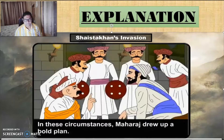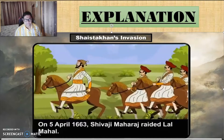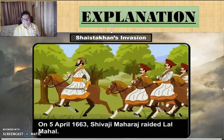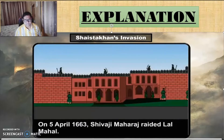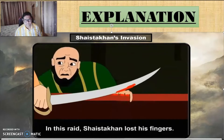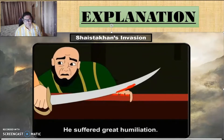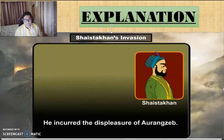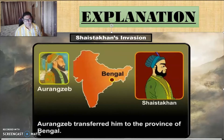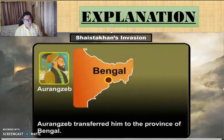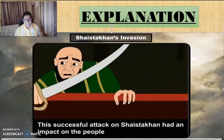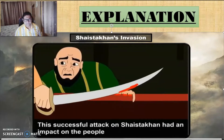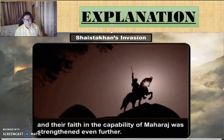This had an adverse effect on the people's morale. In these circumstances, Maharaj devised a great plan. On 5th April 1663, Shivaji Maharaj raided Lal Mahal. In this raid, Shaishta Khan lost his fingers and suffered great humiliation. He left Pune and shifted his camp to Aurangabad. Aurangzeb then transferred him to the province of Bangalore. This successful attack on Shaishta Khan had a great impact on the people, and the capability of Maharaj was strengthened even further.